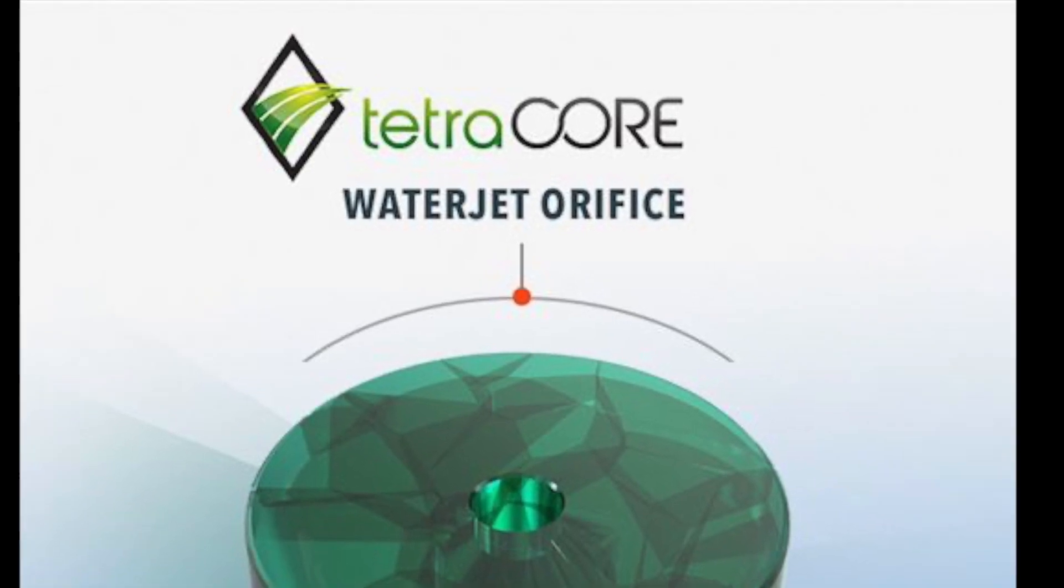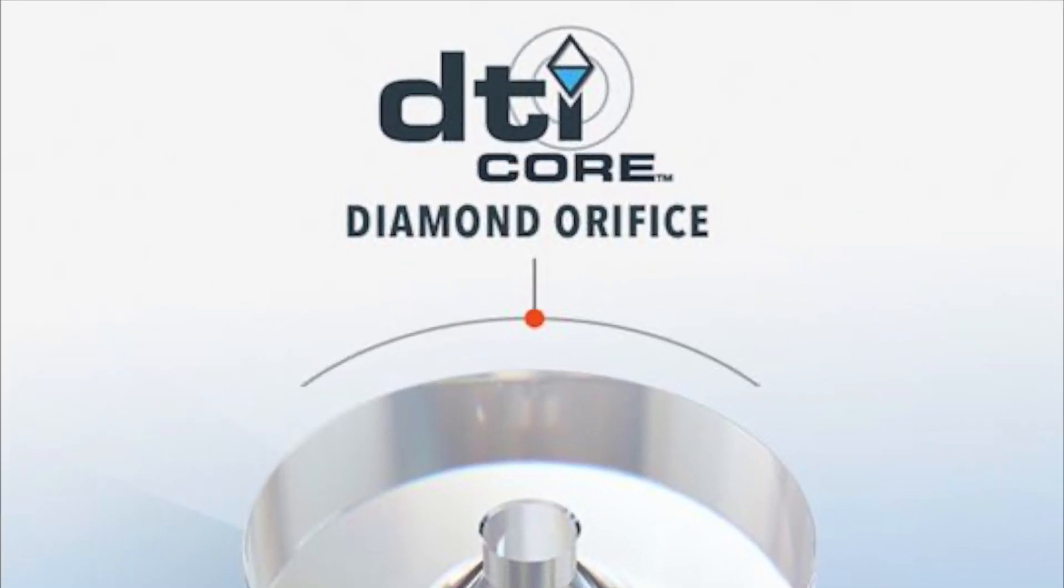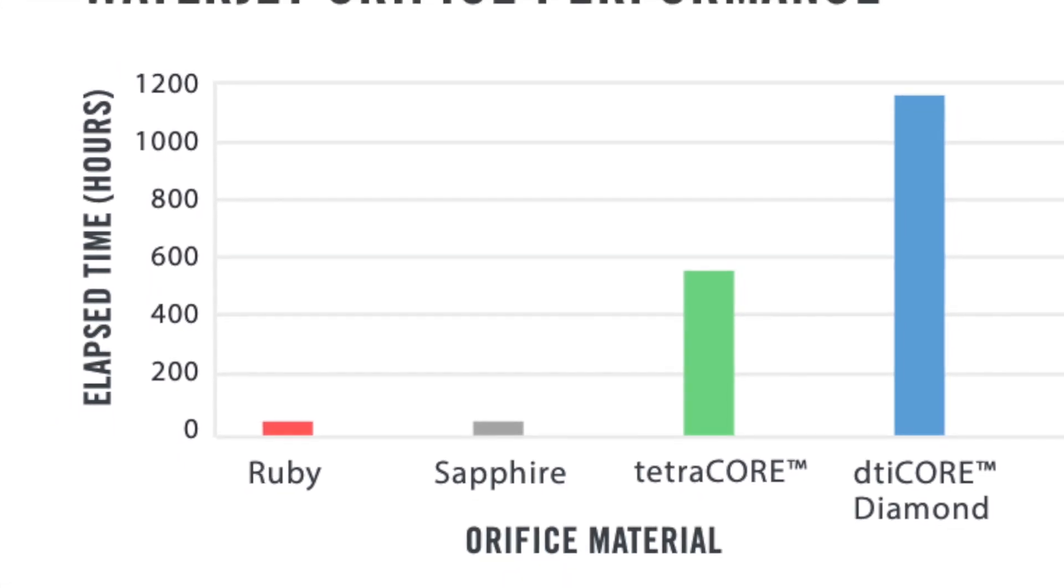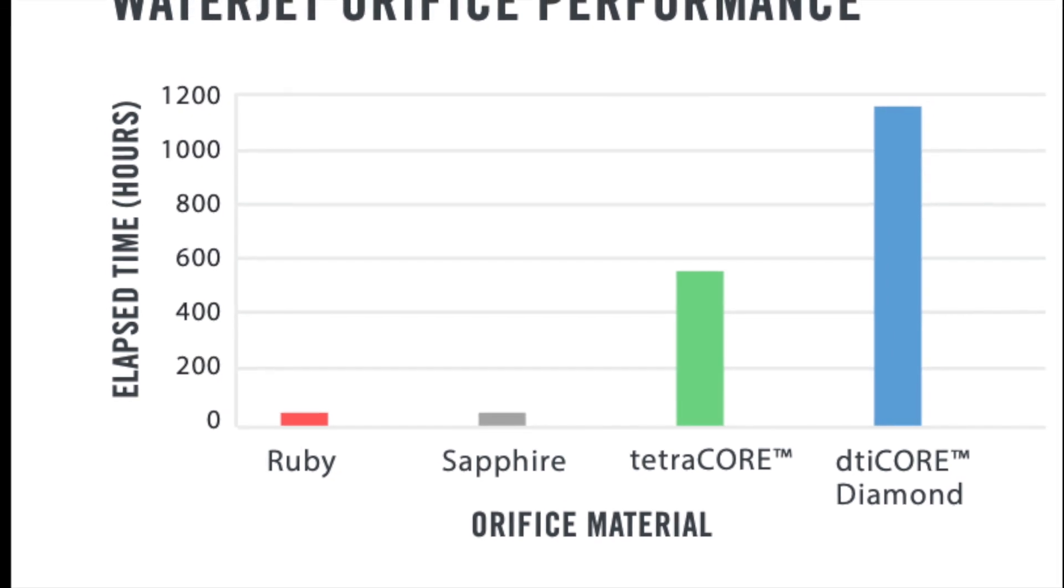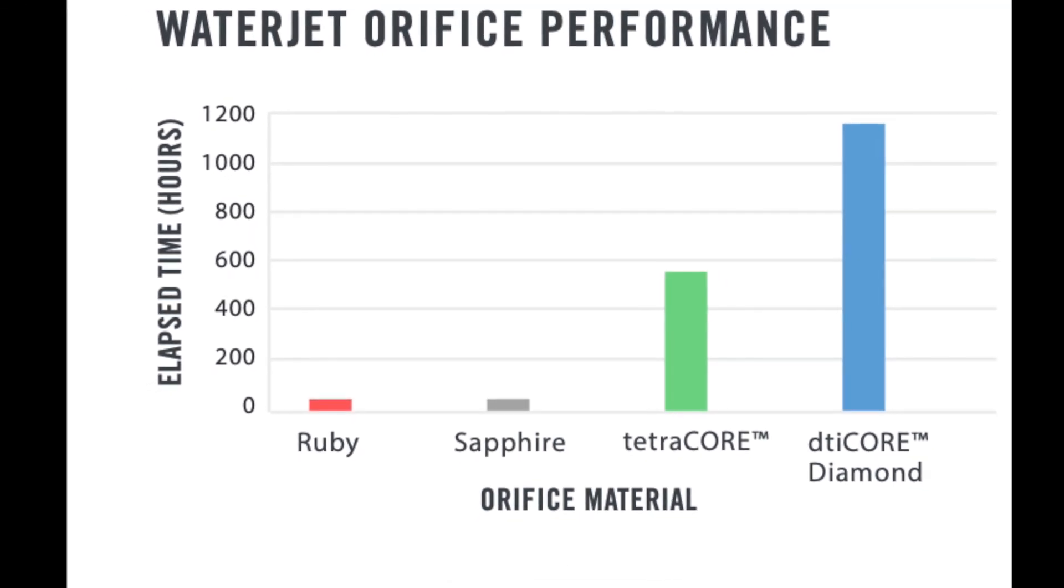Each of these materials offers a different price point and life expectancy. As we take a closer look at this graph here, you can see that ruby and sapphire have about 50 hours. The tetrachor is sub 600 and the diamonds have the ability to last 1200 hours.